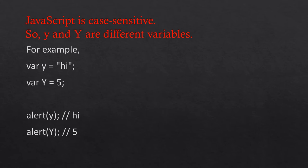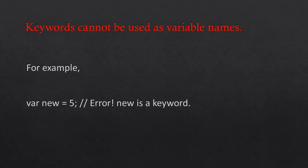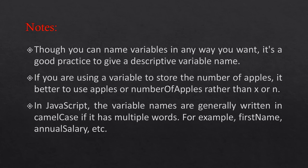For example: var y = 'hi' and var Y = 5 — alert(y) will show 'hi' and alert(Y) will show 5. Keywords cannot be used as variable names; for example, var new = 5 will show an error because new is a keyword. It's good practice to give a descriptive variable name — if you are storing the number of apples, it's better to use 'apples' or 'numberOfApples' rather than x or n.